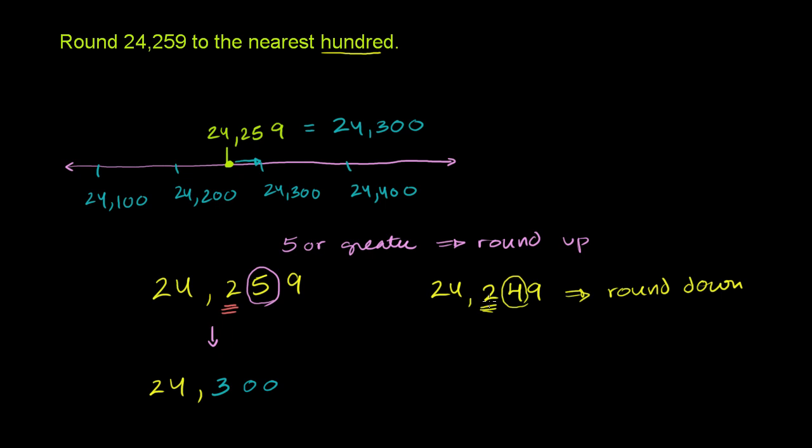It literally means you just only have the two. You just get rid of everything after it. So it becomes 24,200. That's the process where you round down. If you round up, it becomes 24,300. And it makes sense.